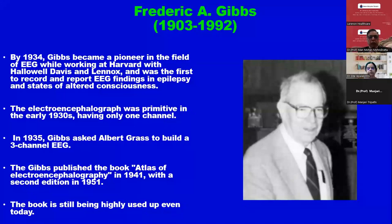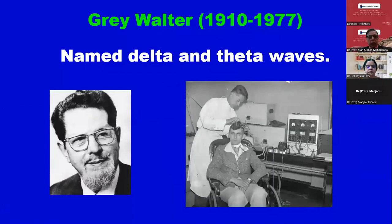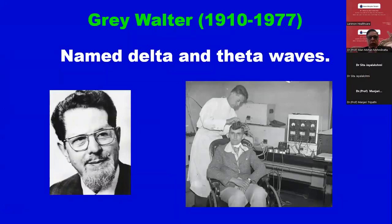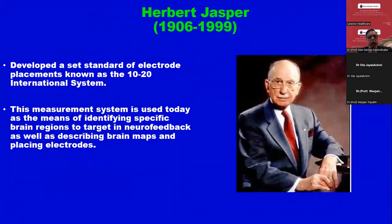Gibbs published the Atlas of Electroencephalography in 1941. So 1924 was Hans Berger, and Gibbs' Atlas of EEG in 1941 with a second edition in 1951. This author also named delta and theta waves. Earlier were alpha and gamma waves described by Hans Berger, and then delta and theta waves. Then the standard of electrode placement known as the 10-20 system was developed — the international 10-20 system, also called the double banana.